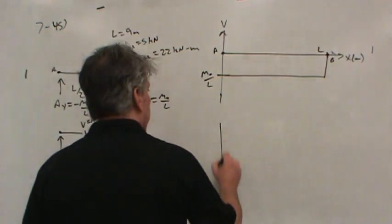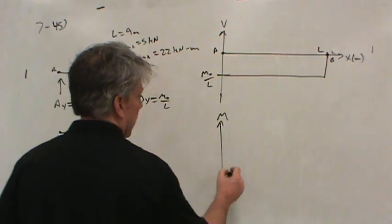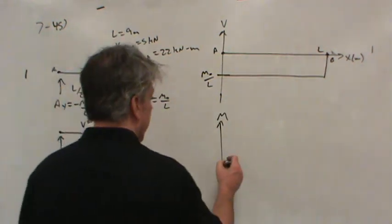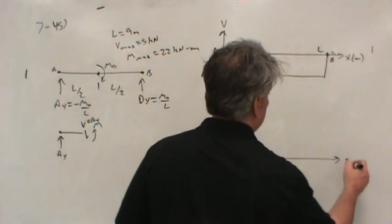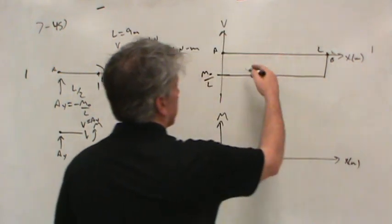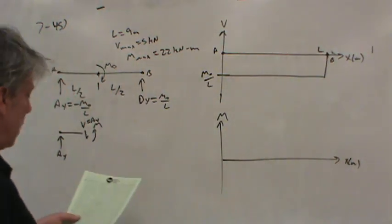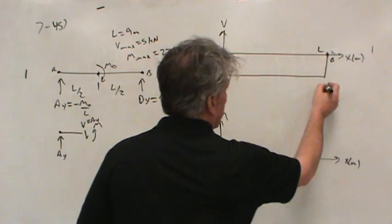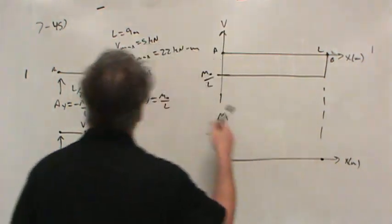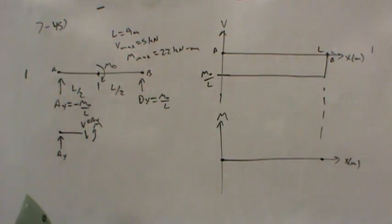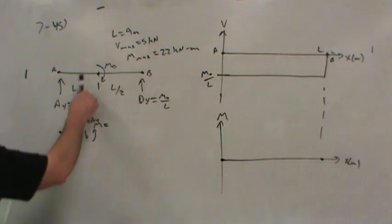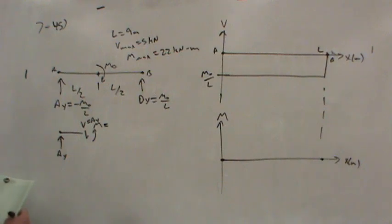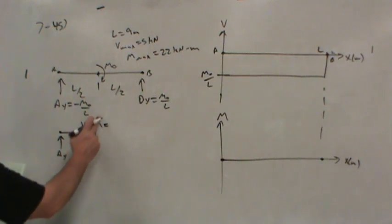Now, what about the moment diagram? You might be tempted to say that the moment diagram is very simple because, look, we're just adding up area. Well, the moment certainly has to begin at zero, but it also should end at zero, shouldn't it? Because there's nothing at the end of the beam applying moment. And so if we calculate the magnitude of the moment, let's say before we get to the point moment load at M-naught, what will we find?